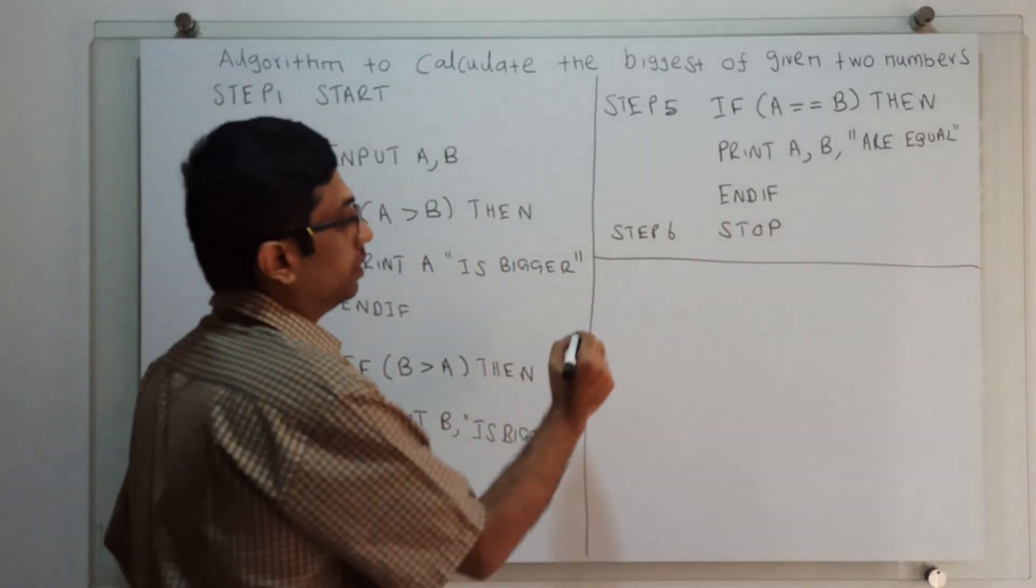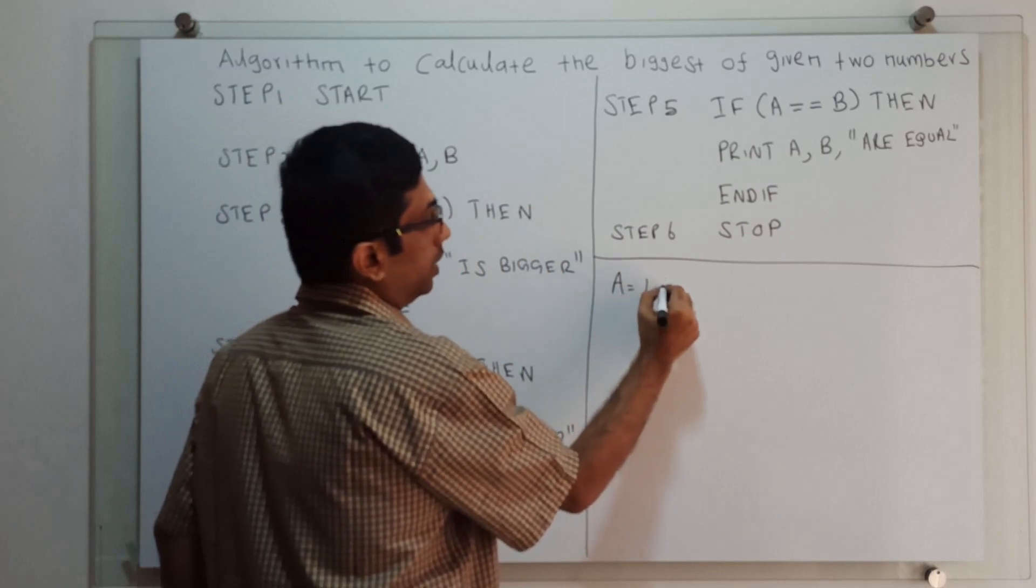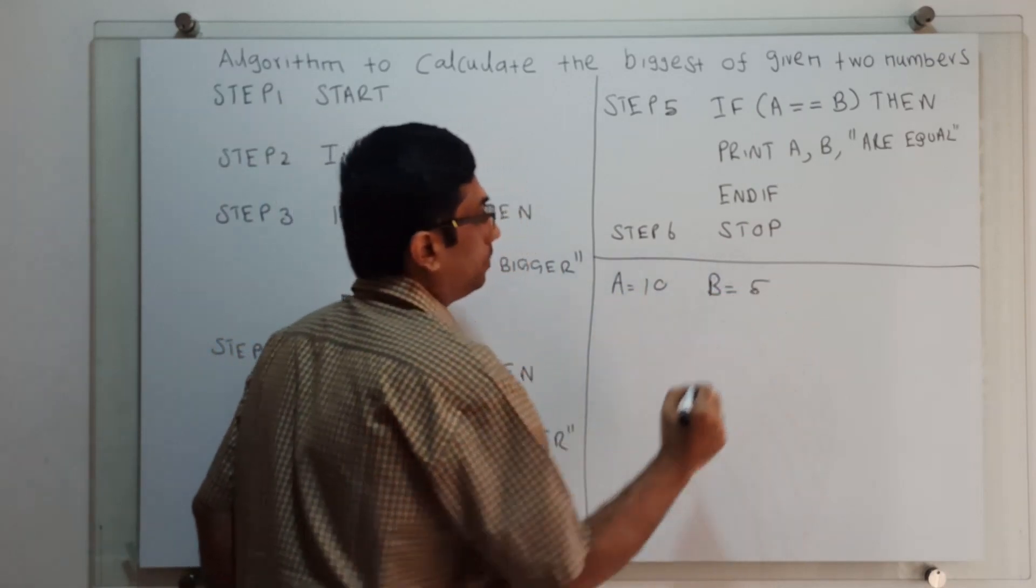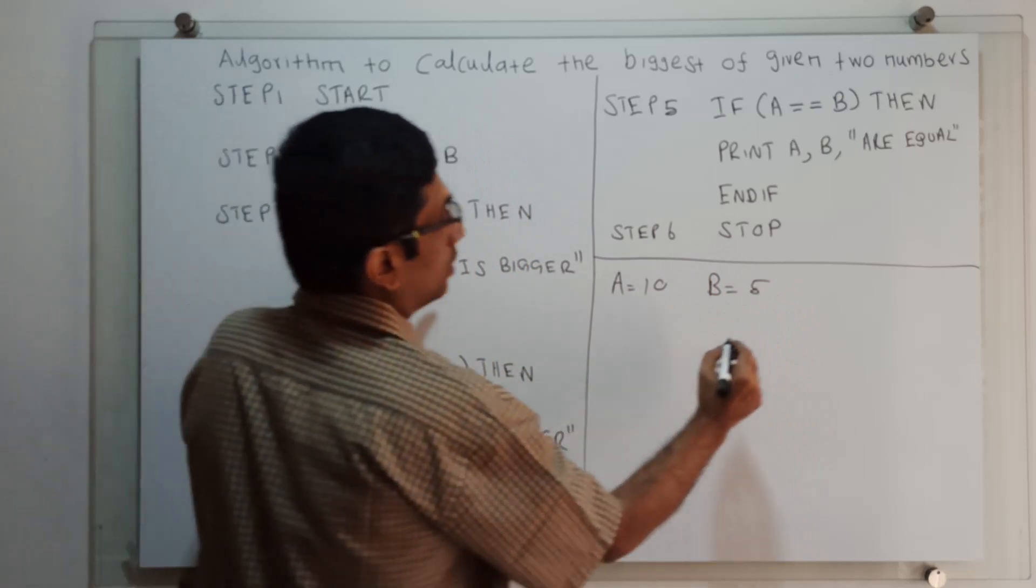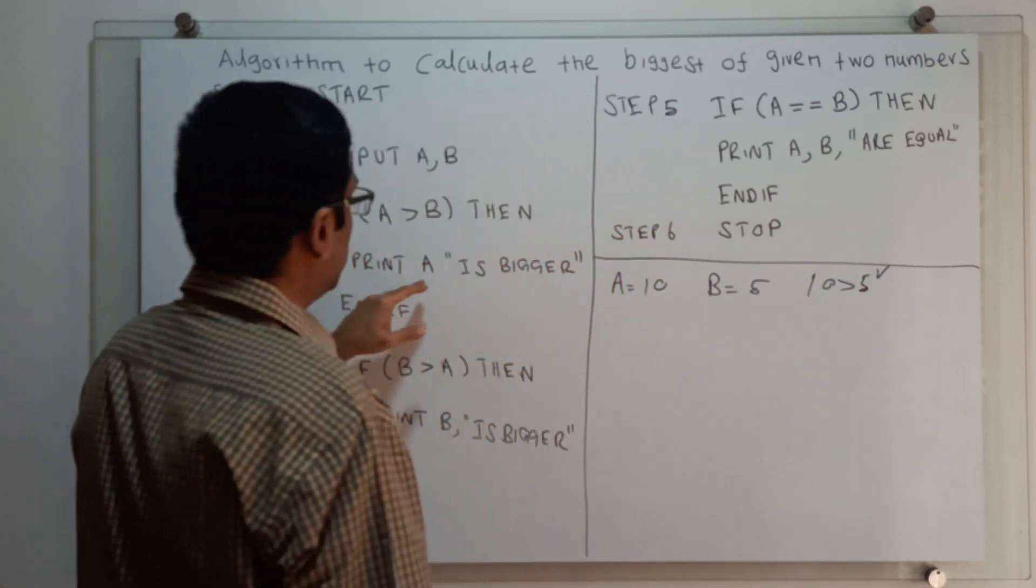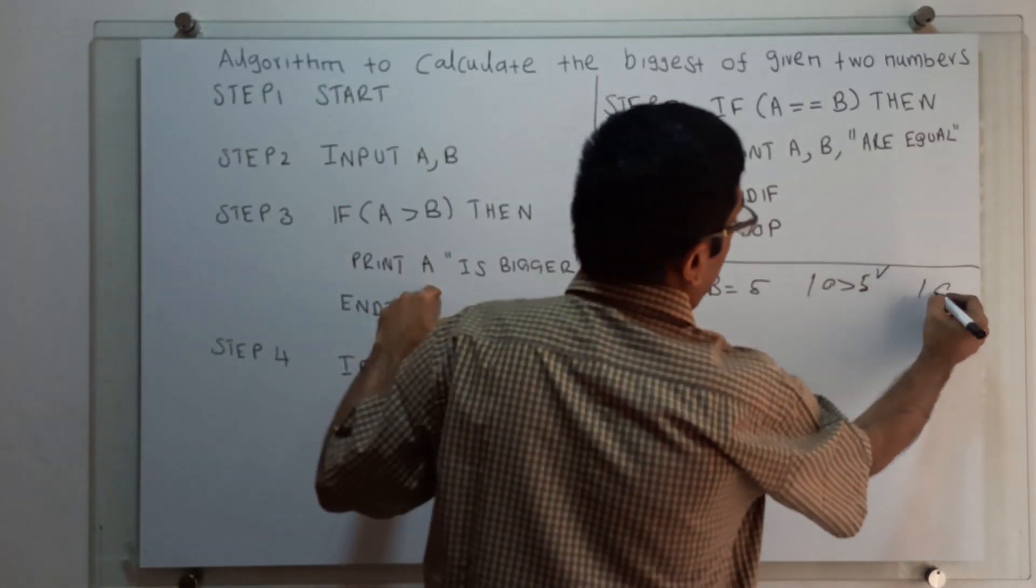For the input, I am giving A equal to 10, B equal to 5. It will check A greater than B. That is, 10 greater than 5 is true. It will print '10 is bigger.'